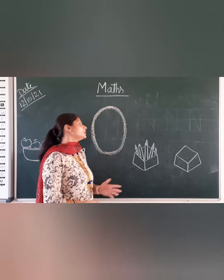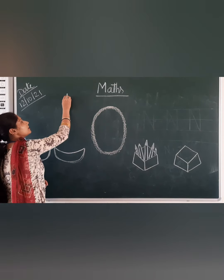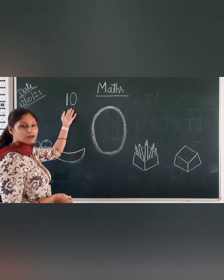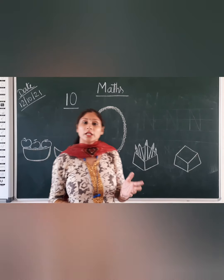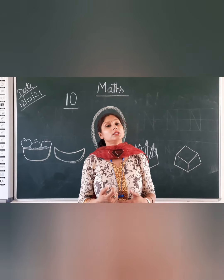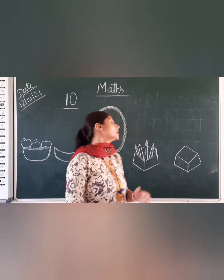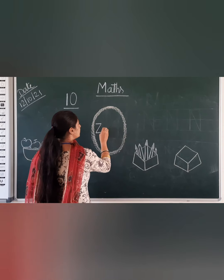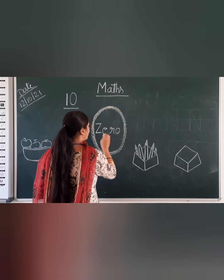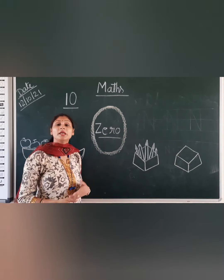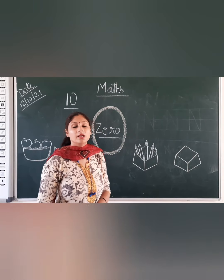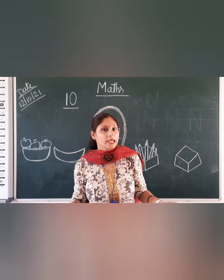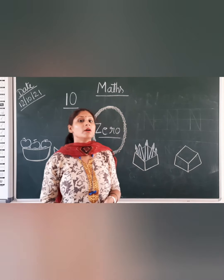Right? So tell me, kya se likhte hai? One, zero — ten. So hamne bachon ne 10 likhna seekh liya hai. Today I am going to explain you about zero. Aaj mein aako zero ka meaning samajhne ja raha hoon. Zero means kya hota hai? Zero means hota hai kuch bhi nahi. Zero means nothing. Aapko pata hai na?